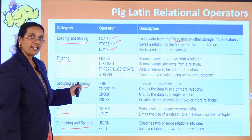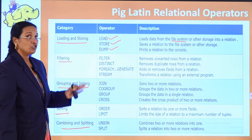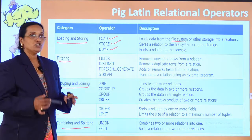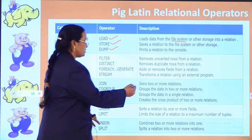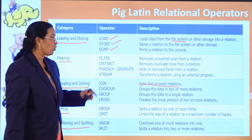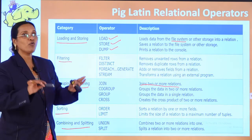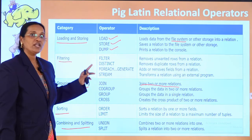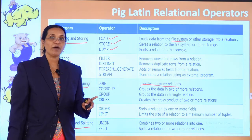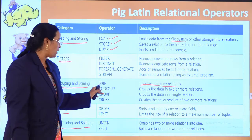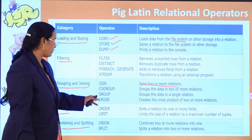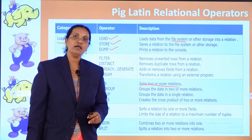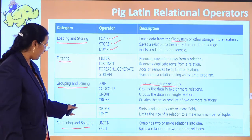Under grouping and joining, the operators are JOIN, CO-GROUP, GROUP, and CROSS. JOIN joins two or more relations. CO-GROUP groups data in two or more relations. GROUP groups data in a single relation — an important distinction frequently asked in interviews and exams. CROSS creates the cross product (Cartesian product) of two or more relations.